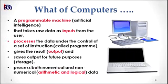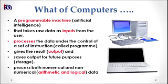Coming to what is a computer — how do we define it? A computer can be defined as a programmable machine which has artificial intelligence. That intelligence is dependent upon its software. There is programming which facilitates the operation of computers. A computer is a machine that takes raw data as input from users, processes the data under the control of a set of instructions called programs, and the result given is called output. It also saves the output for future use in its storage. Therefore, it can be said that a computer is a programmable machine which processes both numerical and non-numerical data and facilitates the saving of results as output.